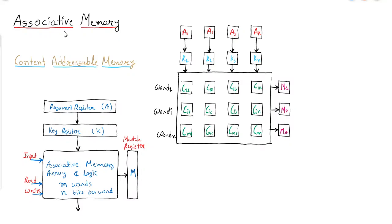Hello students. In the previous tutorial we discussed how to create the connection between CPU and memory, and we discussed the memory address map — how combinedly the address map will be created for RAM and ROM. Now in this tutorial we will discuss associative memory.